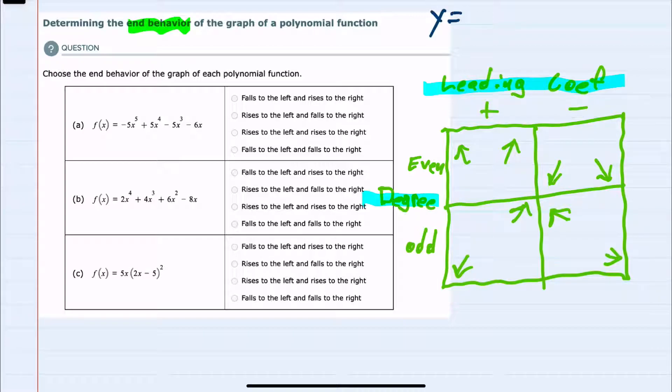So for example, y equals x squared. We know the shape of that. That's a parabola opening up. And we can see that it has an even degree and the leading coefficient is positive.